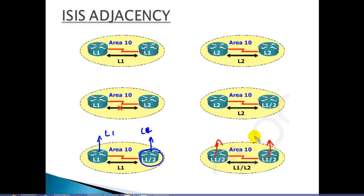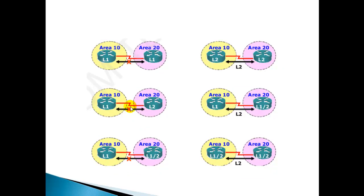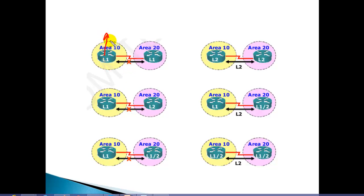If you have Level 1/Level 2 and Level 1/Level 2, which is the default, they will also form the neighborship. So except for the Level 1 vs Level 2 mismatch scenario, all the remaining combinations are going to work and they will form the neighborship.